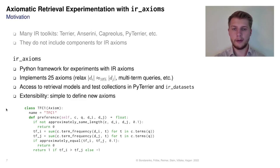In the example at the bottom of this slide, we can see an implementation of the aforementioned TFC1 axiom, in which we define an axiom name and overload the preference function. In the preference function, we first check if the two documents have approximately the same length. Then we count term occurrences for all query terms. If the term frequencies are different enough, we prefer the document with a higher term frequency.